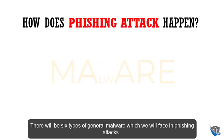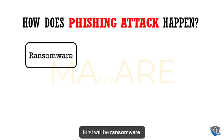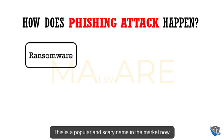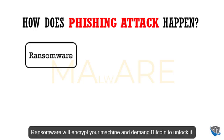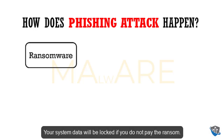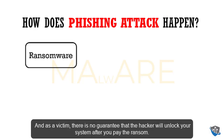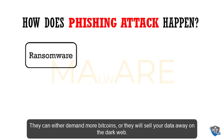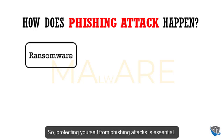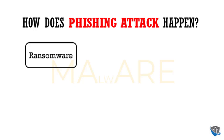There are six types of general malware we face in phishing attacks. First is ransomware — a popular and scary name. Ransomware will encrypt your machine and demand Bitcoin to unlock it. Your system data will be locked if you do not pay the ransom. It is actually a crime for the victim to pay the ransom, and there is no guarantee the hacker will unlock your system — they may demand more or sell your data on the dark web.